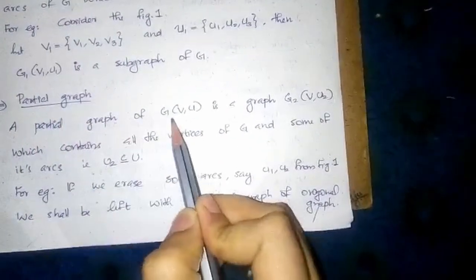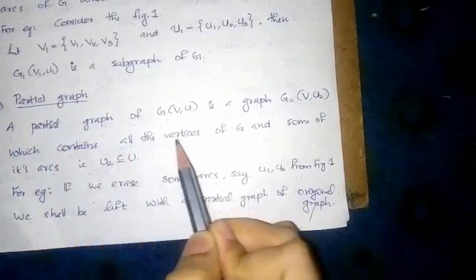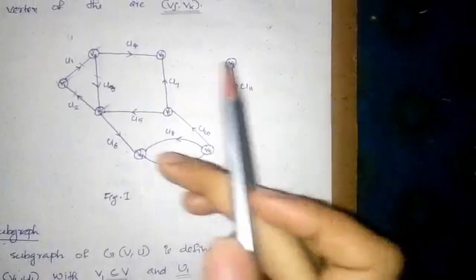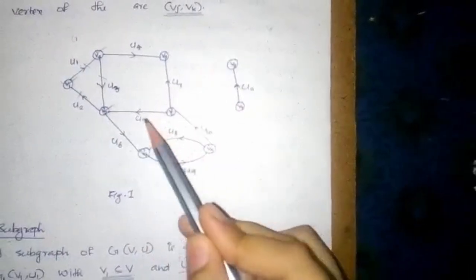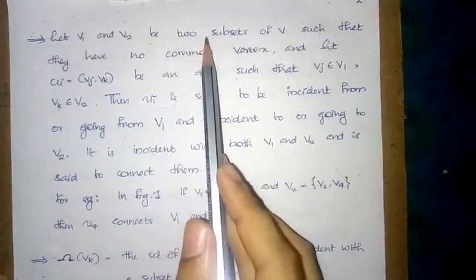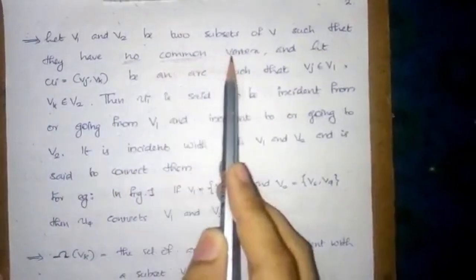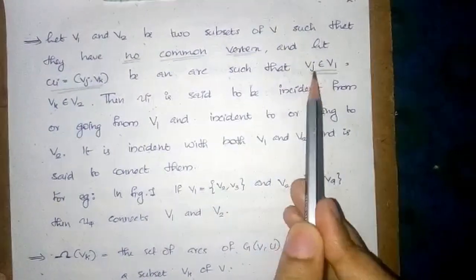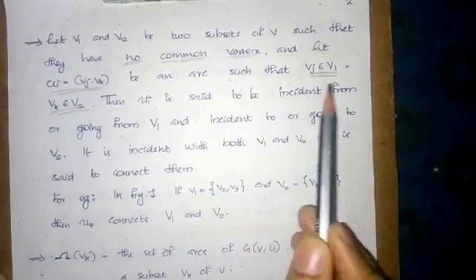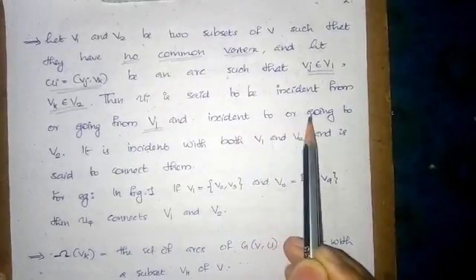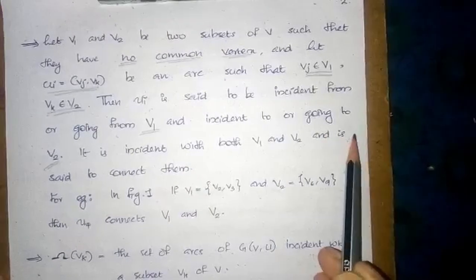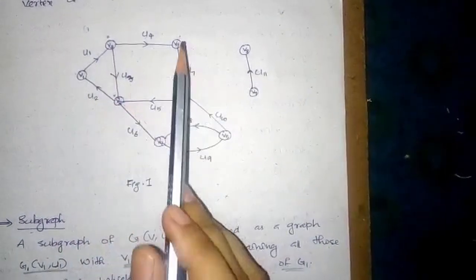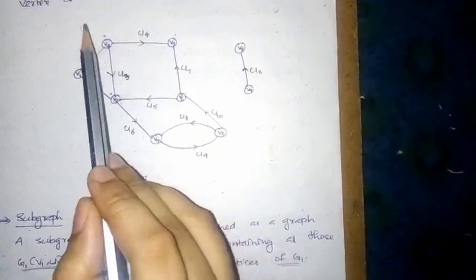Partial graph. A partial graph of G(V,U) is a graph G2(V, U2) which contains all the vertices of G and some of its arcs, that is U2 is a subset of U — we can erase some arcs from the original graph to obtain a partial graph. Let V1 and V2 be two subsets of V with no common vertex, and let Ui = (Vj, Vk) be an arc such that Vj belongs to V1 and Vk belongs to V2. Then Ui is said to be incident from V1 and incident to V2, connecting them. For example, let V1 = {V2, V3} and V2 = {V9, V6}; then the arc U4 is said to connect V1 and V2.